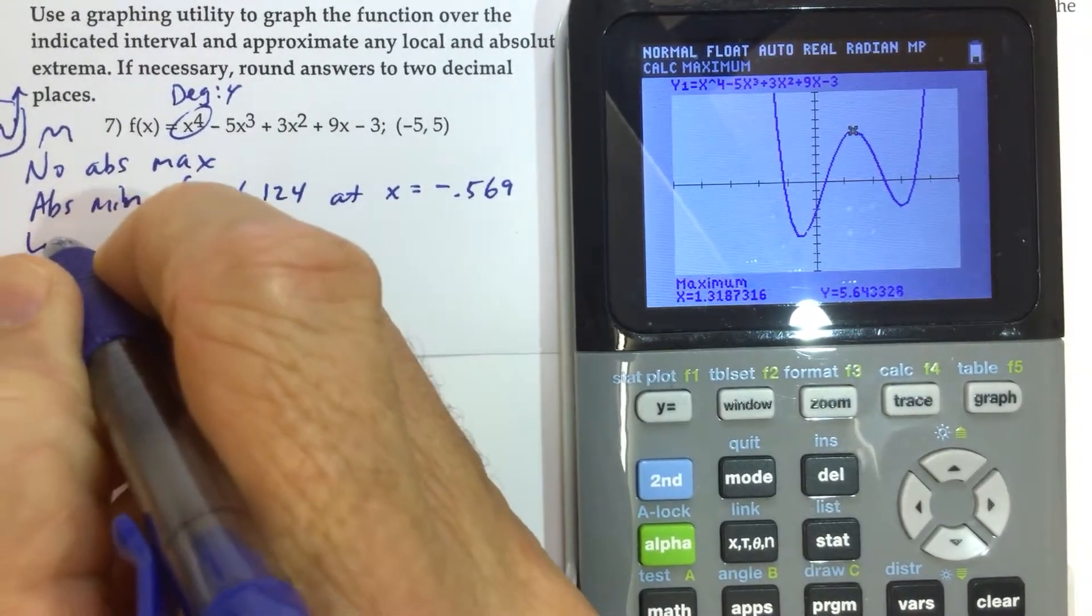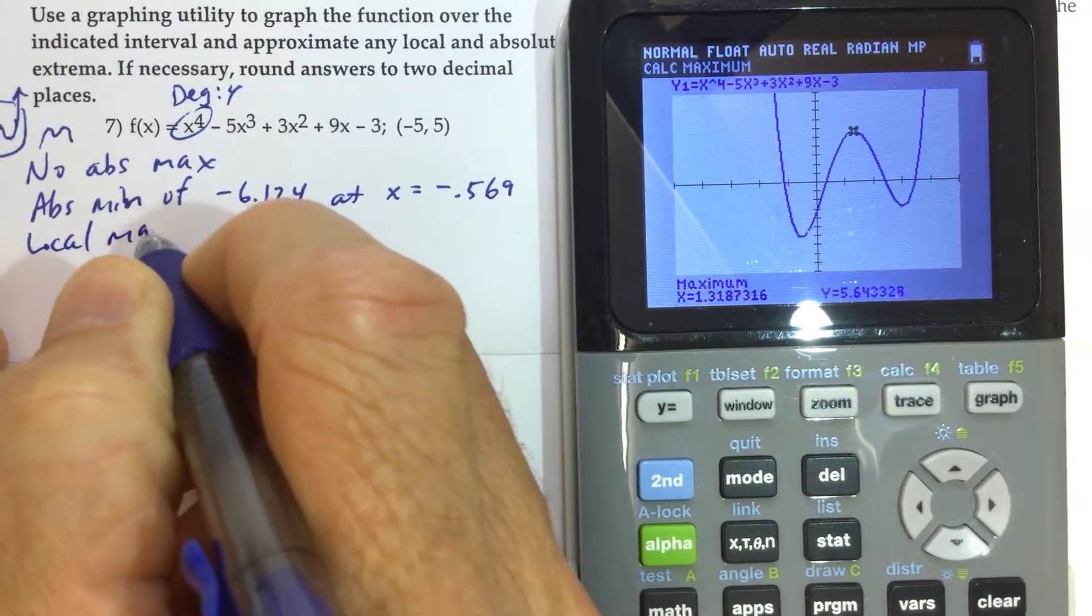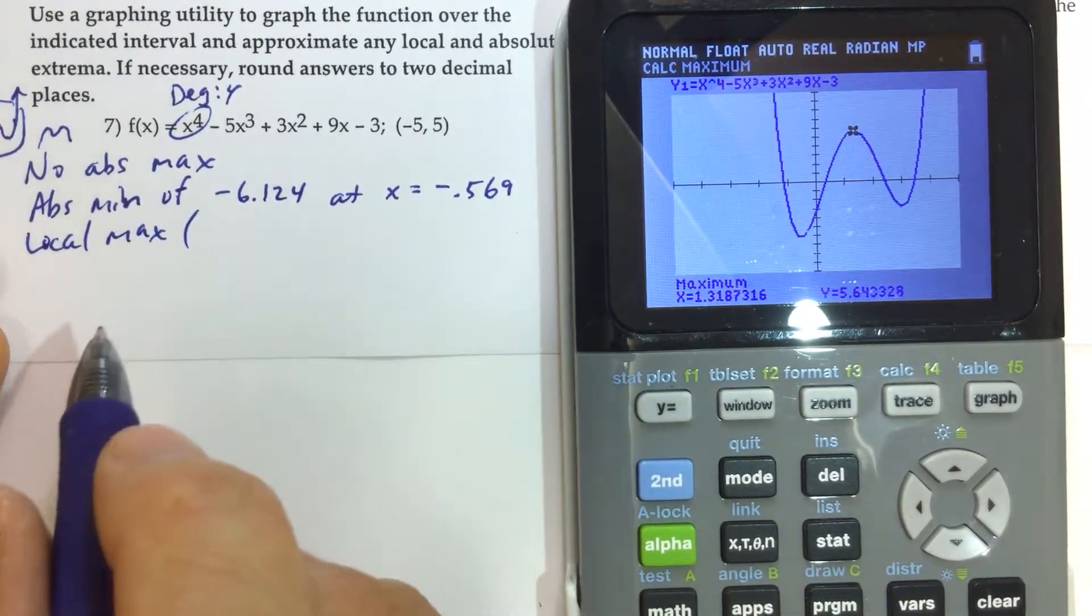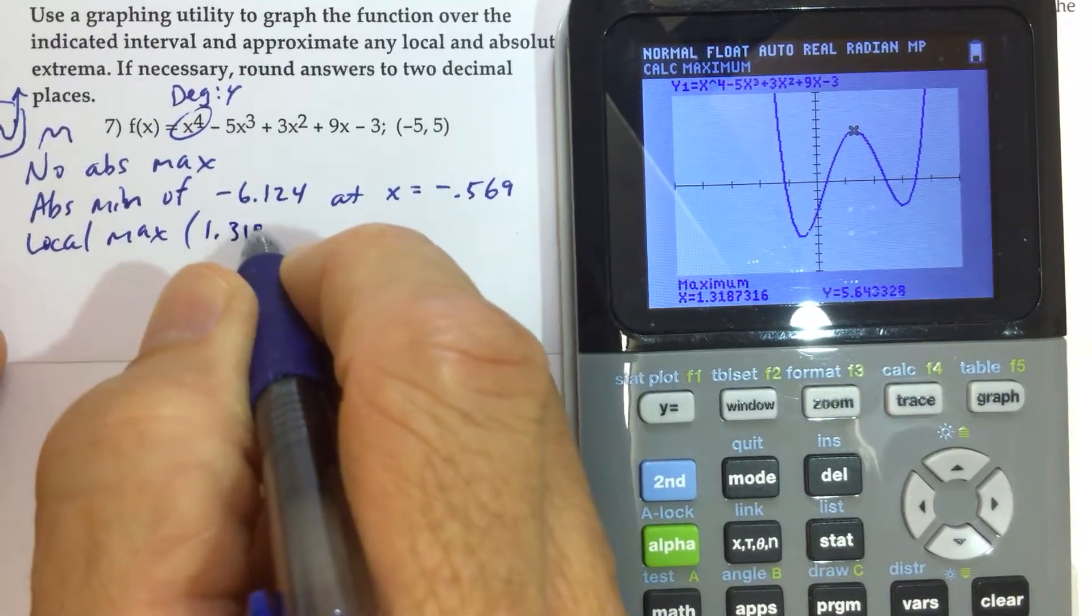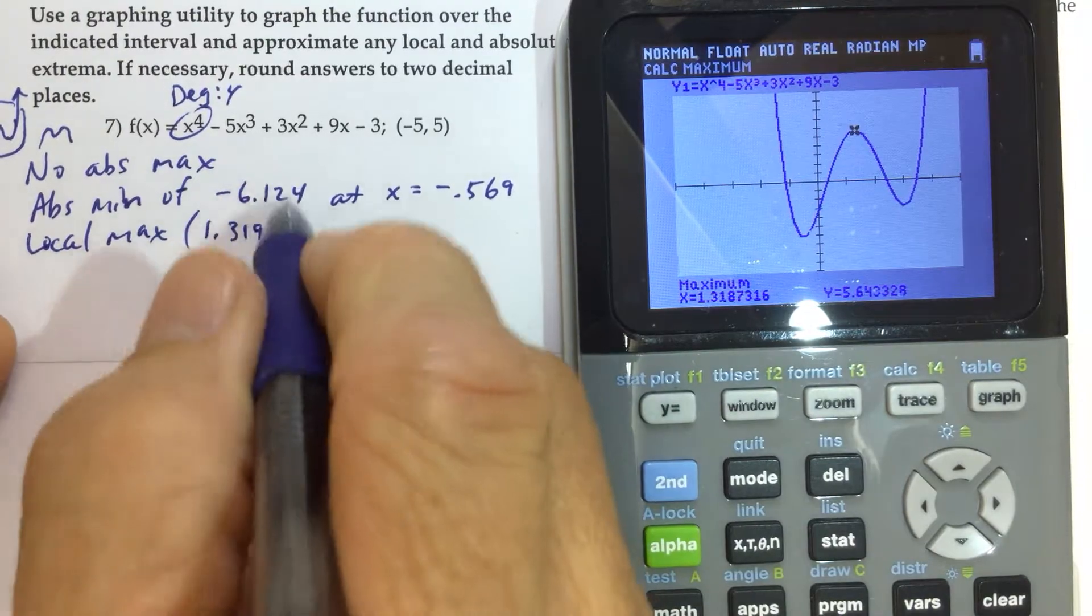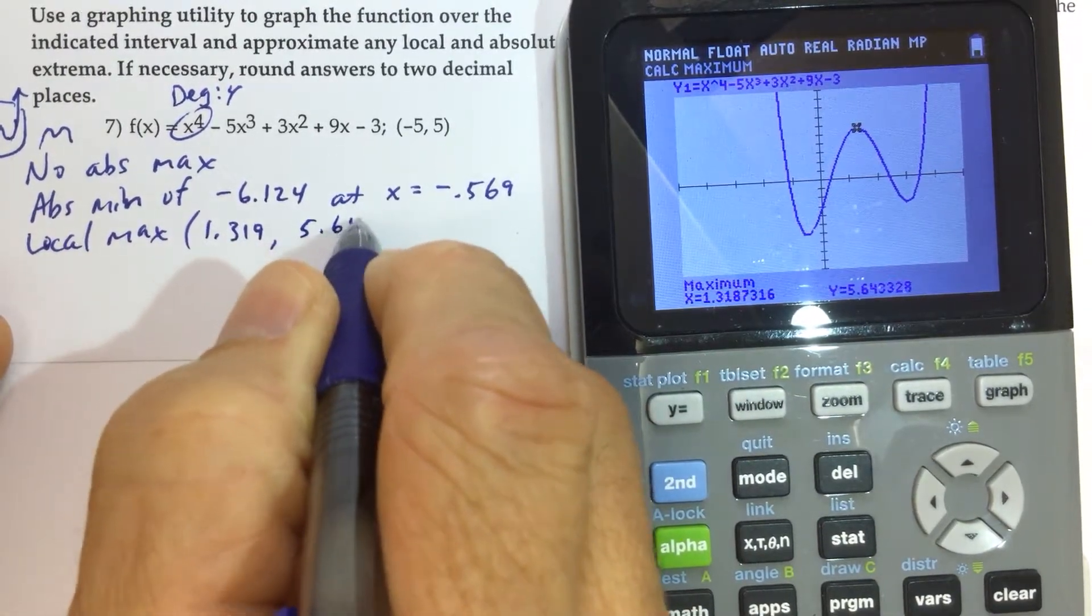So we have a local max. Local max. I'm just going to, instead of writing all that, I'm just going to write a local max at 1.319, comma, 5.643.